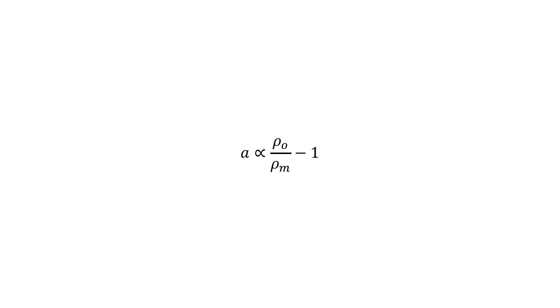We are going to define some quantity, b. So we can say that b is equal to the object's density over the medium's density, minus one. And we can then say that a is proportional to b, where b is equal to this quantity. And this will allow us to do some work before having to worry about coefficients and stuff, because Anthony doesn't like them.